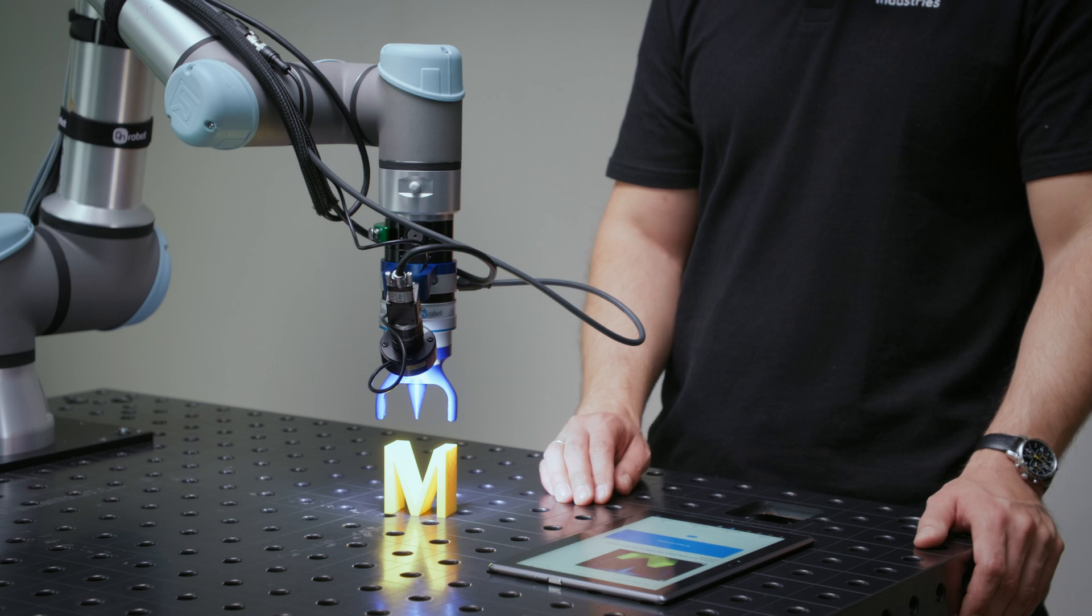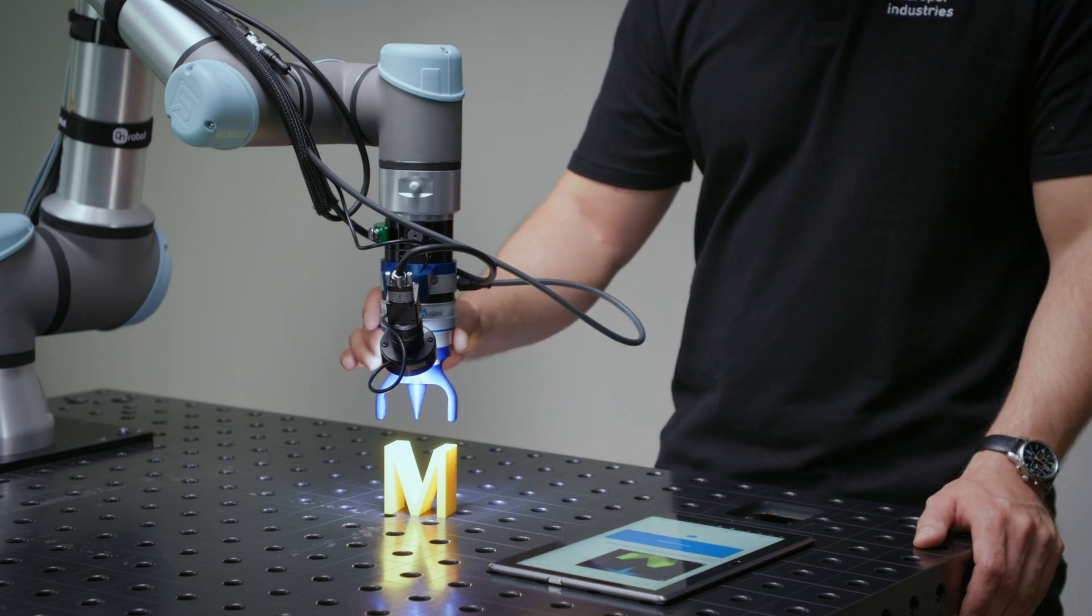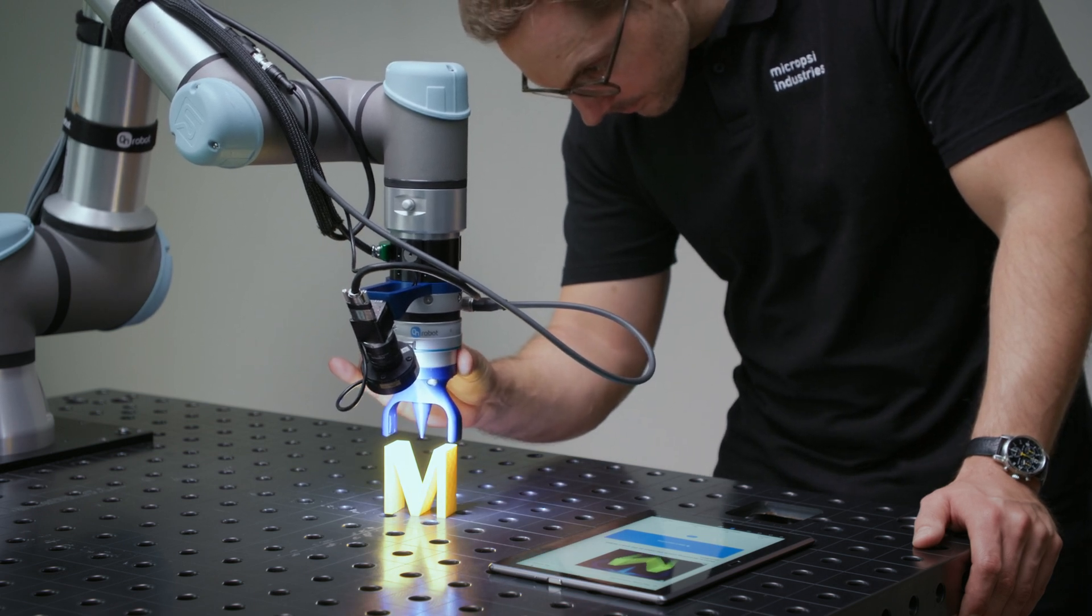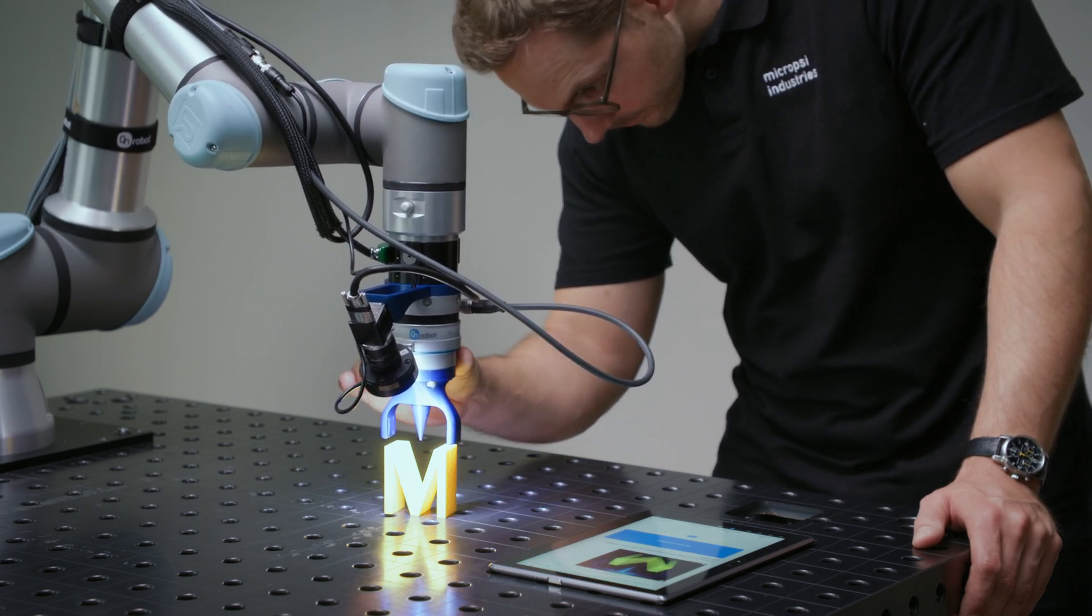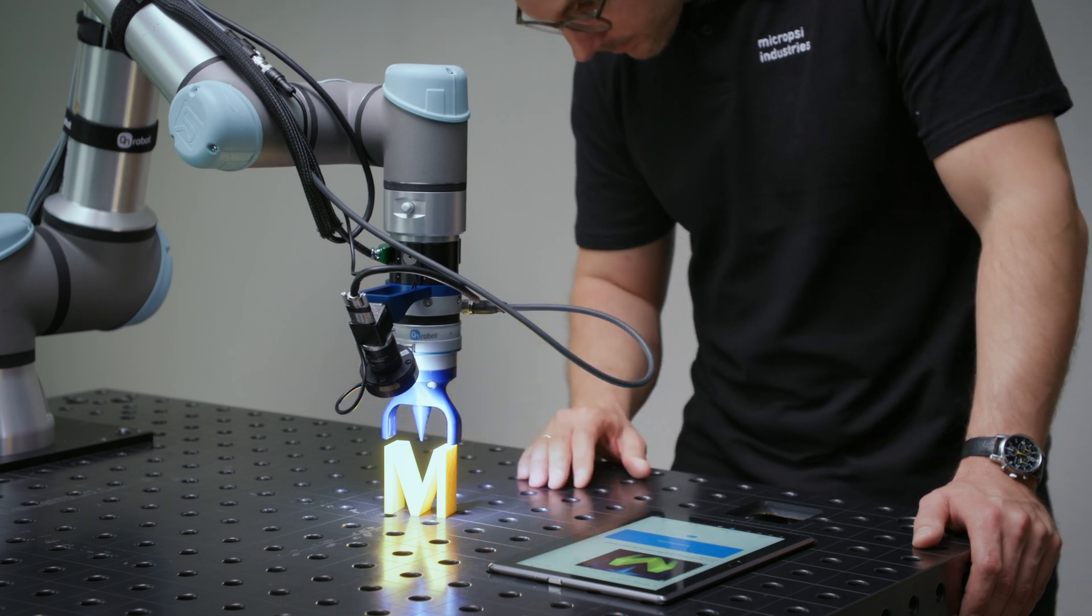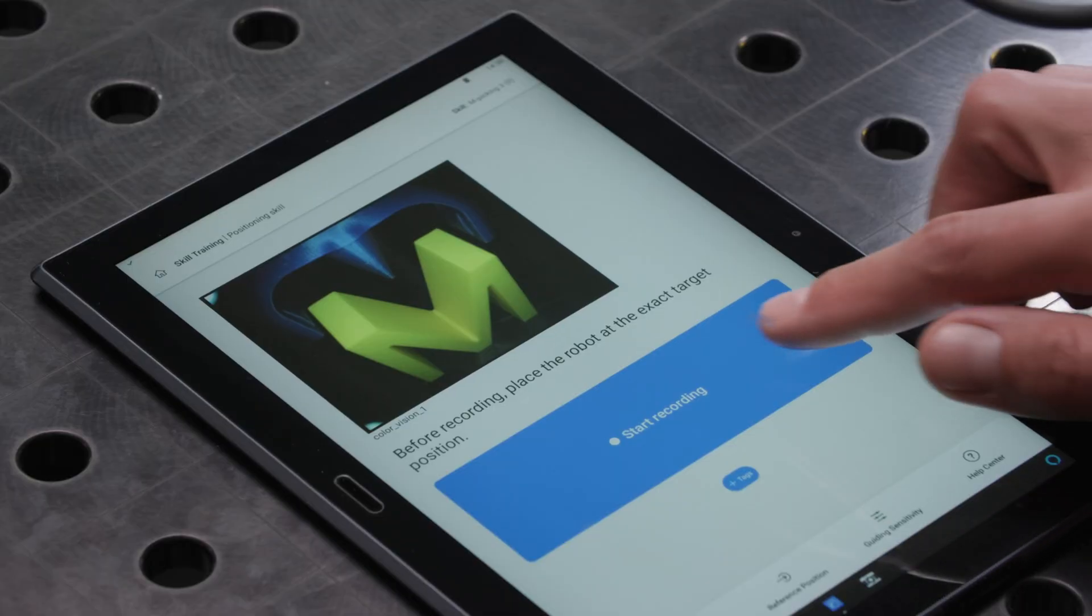To start the first episode, guide the robot's tool center point to its target position. We want to align the tip of the gripper slightly above the M. Both sides of the M should also be equidistant to the gripper fingers. Take care that nothing will obstruct the path to the target position. Start recording.